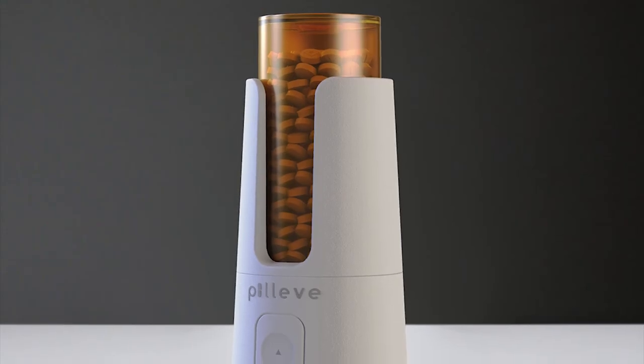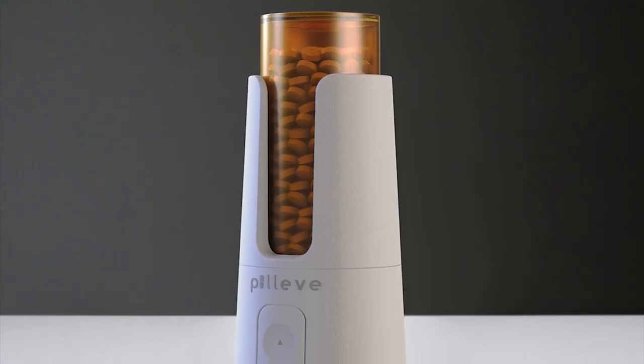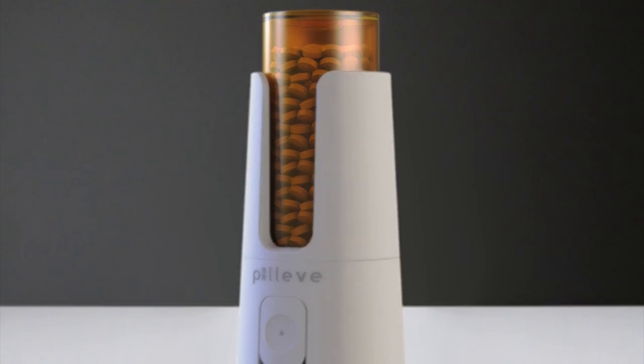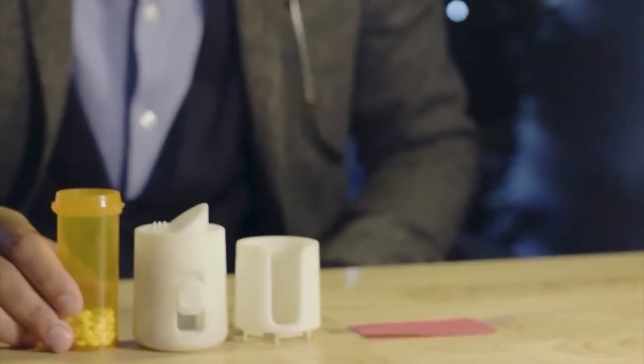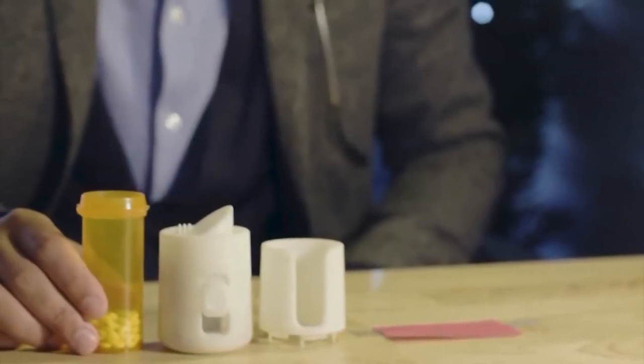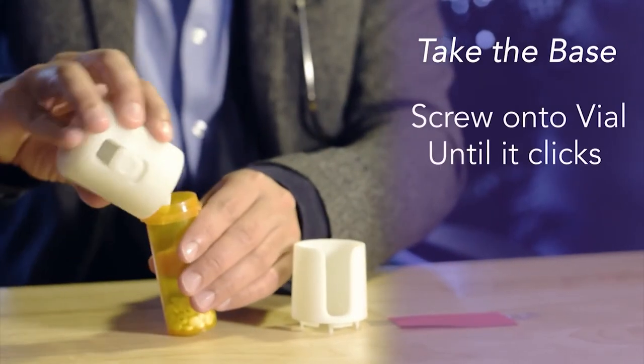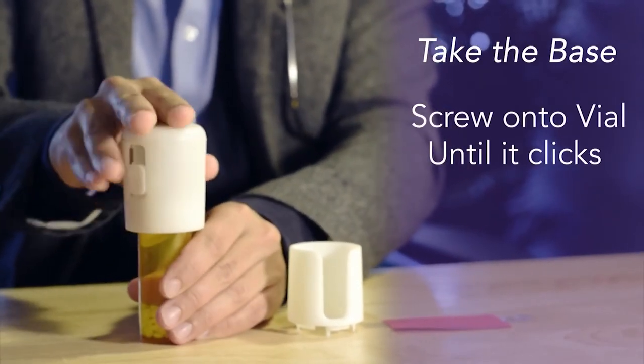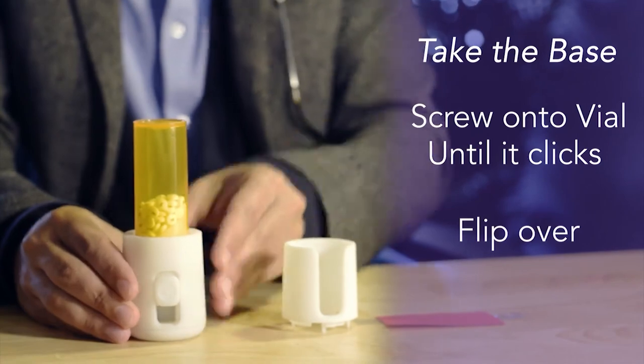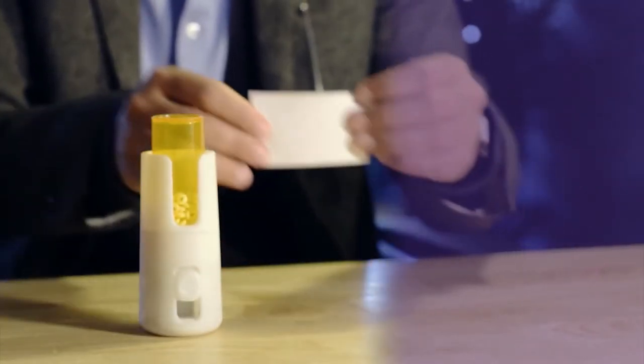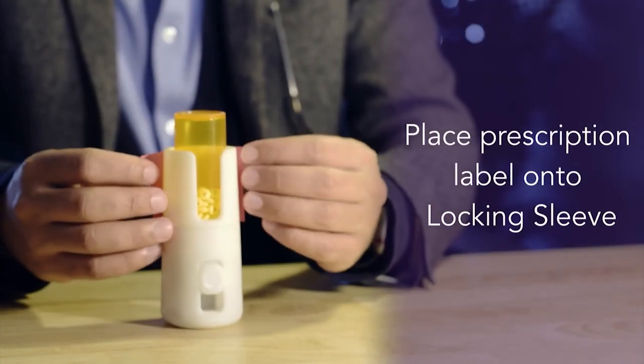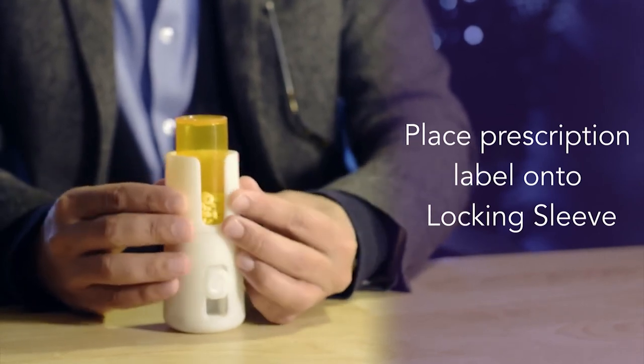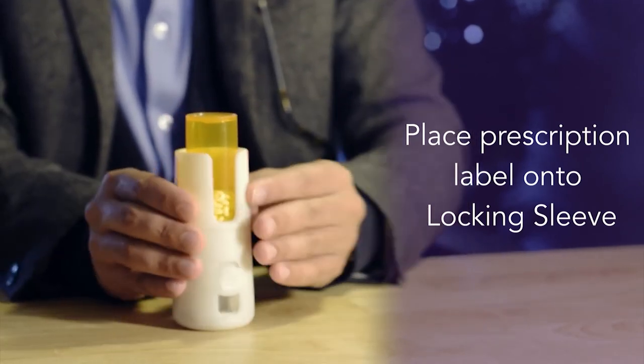What you need to overcome being an opioid addict are 13 or 16 Dranberry FNS vial, Pileve base, locking sieve, and prescription label. Take the base, screw onto the vial until it clicks, flip over and snap in the locking sieve, then place the prescription label on the locking sieve. The Pileve is portable and can be tucked in the pocket for usage on the go.